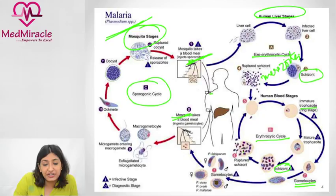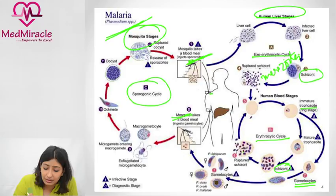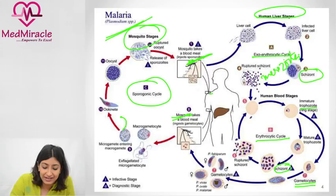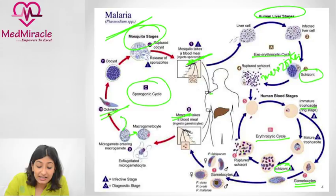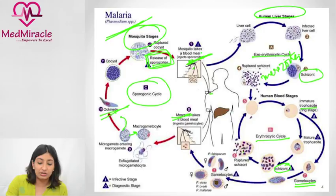Within the mosquito, the female gametocyte converts into a macrogamete and the male gametocyte converts into a microgamete with a tail attached. They fertilize, forming a zygote also known as an ookinete. The ookinete converts into an oocyst, which ruptures and releases sporozoites that travel to the mosquito's saliva. The oocyst and ookinete development takes place in the stomach wall of the mosquito.